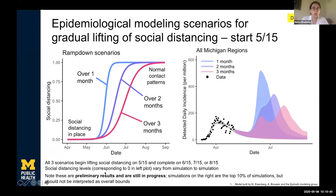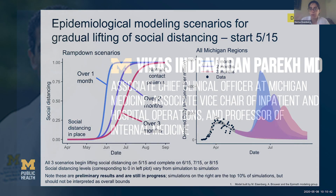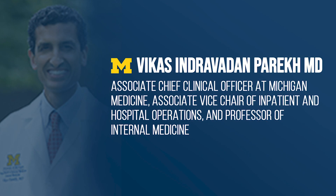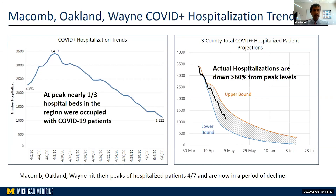From the hospital and health system perspective, looking at the Detroit metro tri-county area, which was the hotspot: at the peak, we had about 3,500 patients hospitalized with COVID-19. That was really one out of every three beds in the region occupied by a COVID-19 patient. The good news is that number has come down dramatically — our projection numbers are down 60 percent from the peak, so the health system now has significant capacity and has recovered.